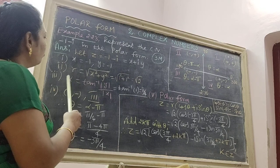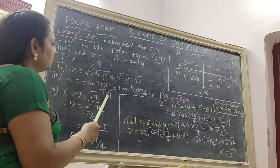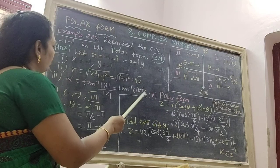Similarly, we find alpha is equal to tan inverse minus y by minus x. We get the answer pi by 4.